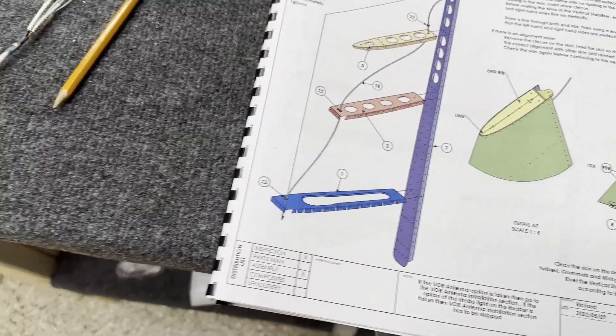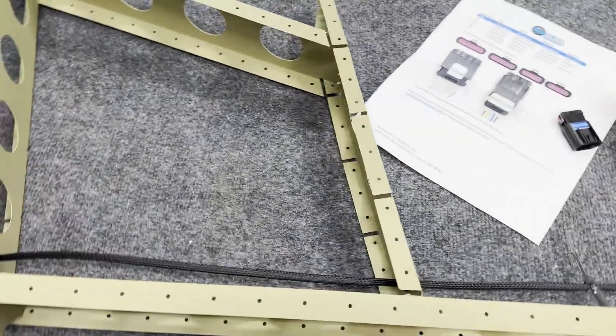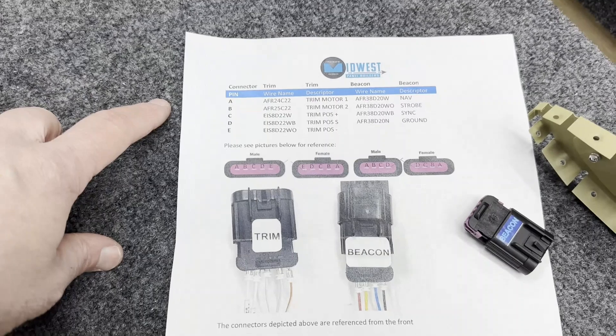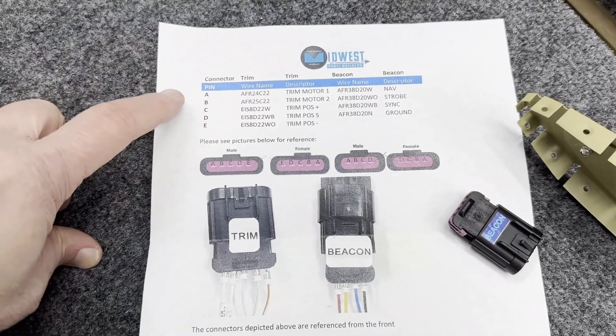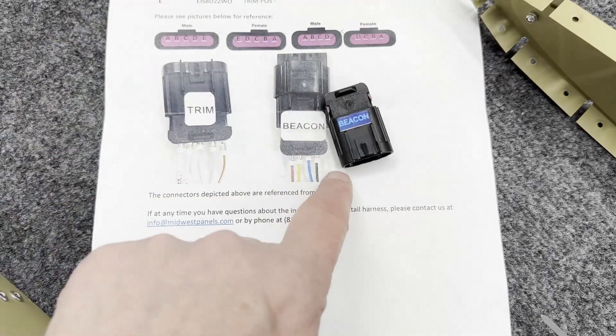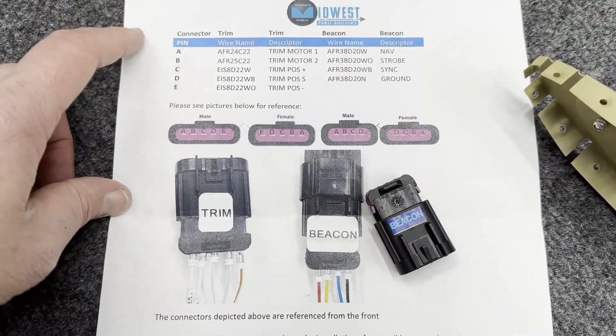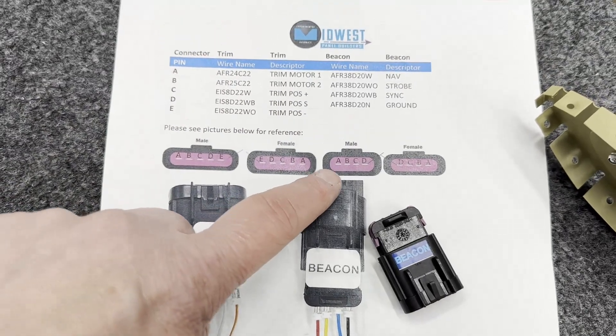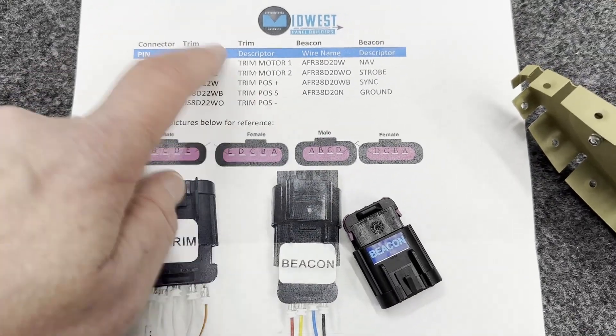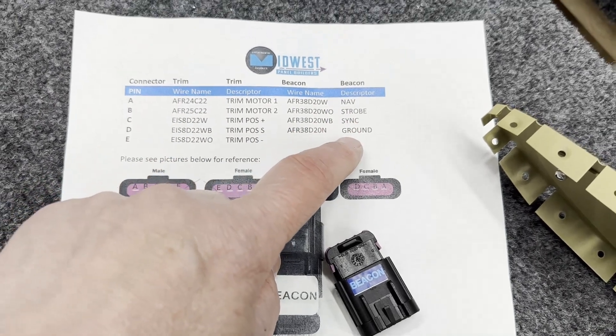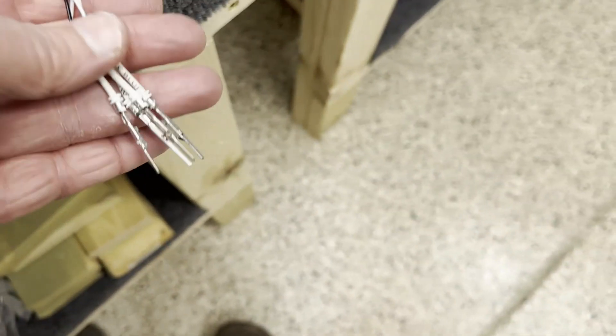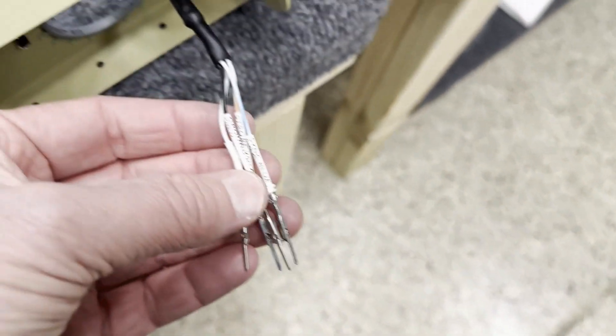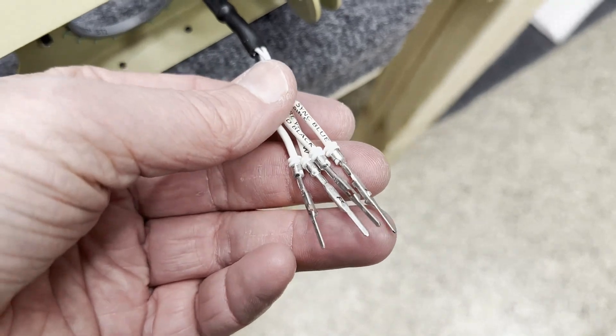Midwest provides some good instructions. They tell you basically what to do with the pins. This is going to be the male side of the house, so we're going to follow the male instructions which is A B C D, and we're going to pin nav strobe sync ground. They already did the labeling for us which is great, so each cable is nicely labeled and they pre-terminated the pins.